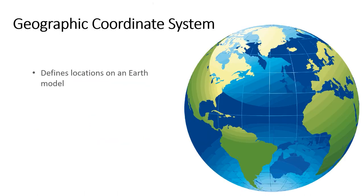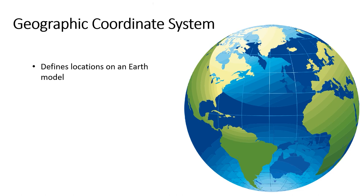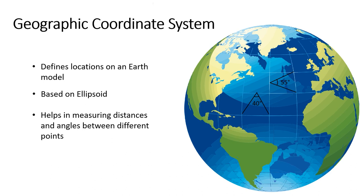A Geographic coordinate system is a reference framework that defines the locations of features on an earth model. These coordinates are based on an ellipsoid that approximates the earth's shape, allowing us to measure distances and angles between different points of the earth.